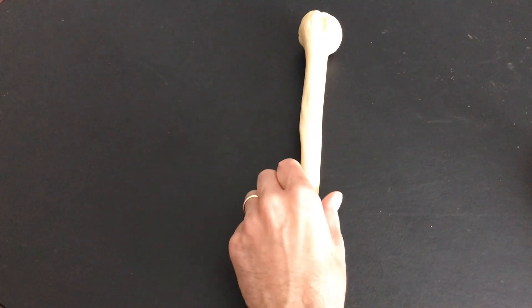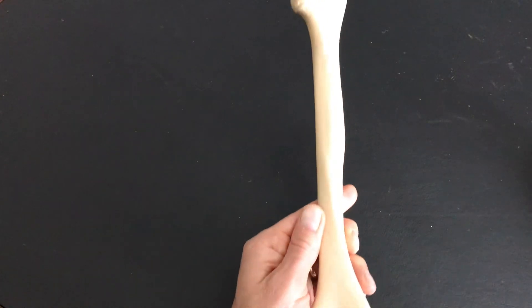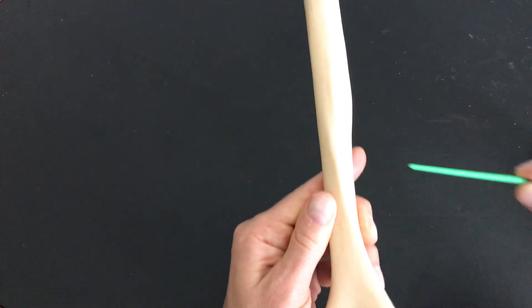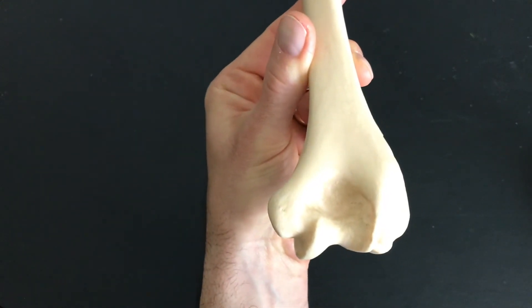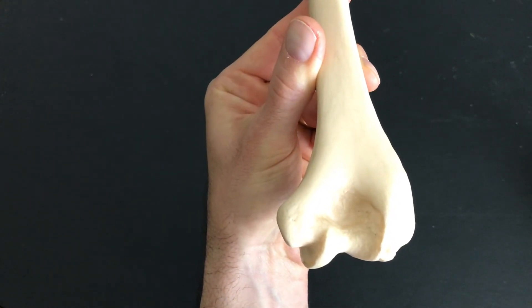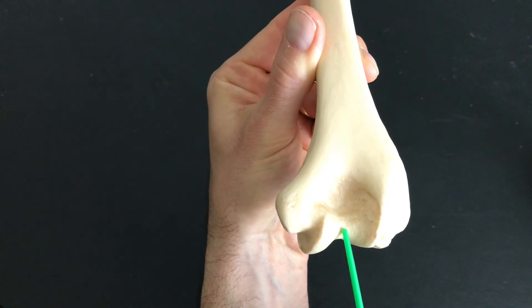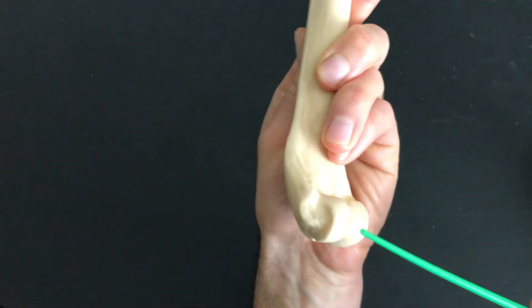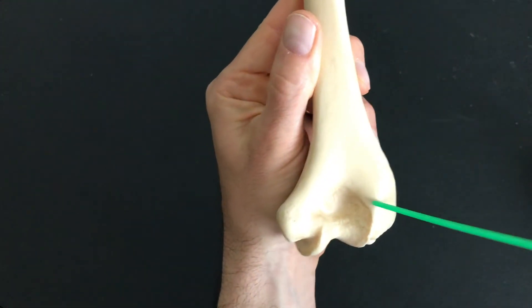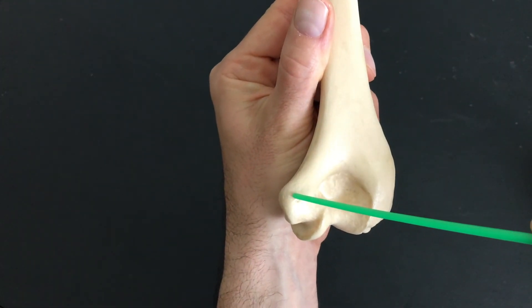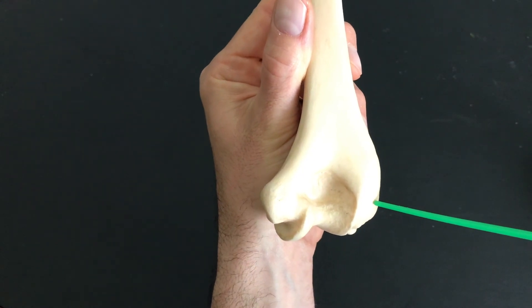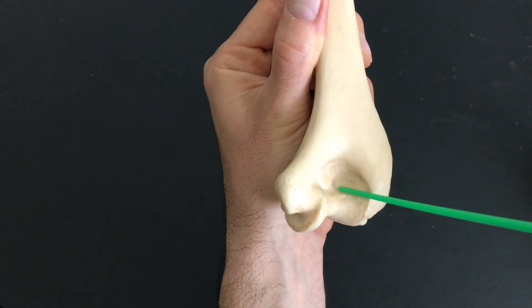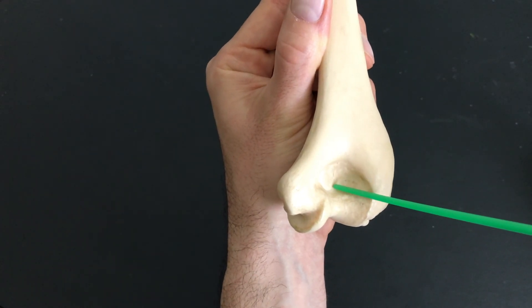On the posterior view, if we turn it around this way, you'll still see that deltoid tuberosity. But when we come here on the bottom, again towards your elbow, you'll see a little bit of that trochlea. You won't see as much of the capitulum—I'm pointing at it on the other side here—but you will see medial condyle, lateral condyle, and something called the olecranon fossa. That's this big indentation right here, the olecranon fossa.